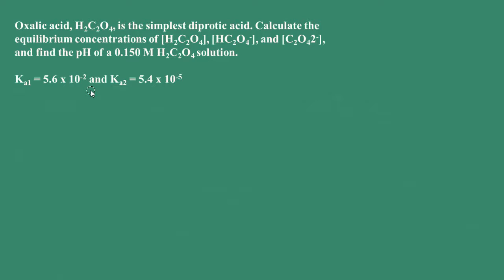Hi, this is Dr. O'Connor. Welcome to Pathways to Chemistry. Here we have a problem which involves a diprotic acid, oxalic acid. We're asked to calculate the pH of a 0.15 molar oxalic acid solution, and we're also asked to determine the equilibrium concentrations of oxalic acid, hydrogen oxalate, and the oxalate ion.